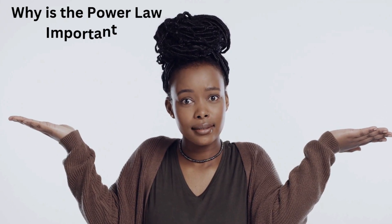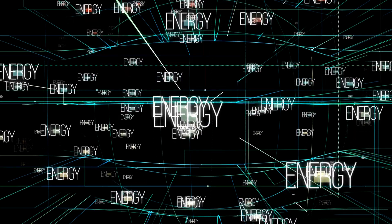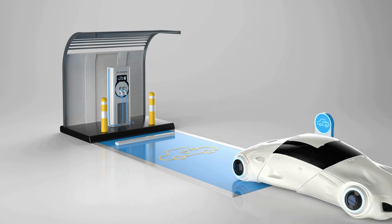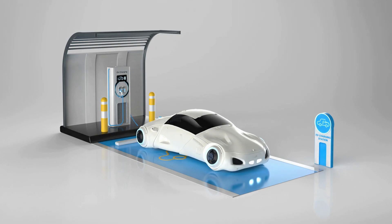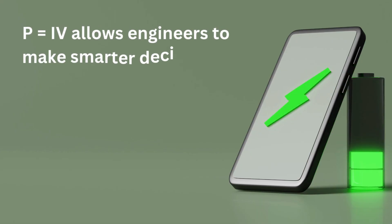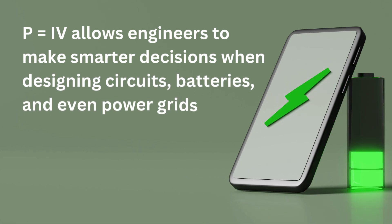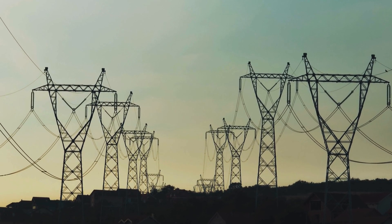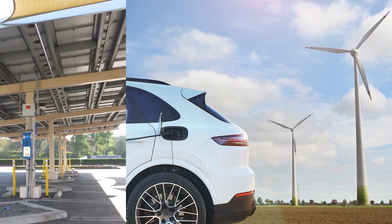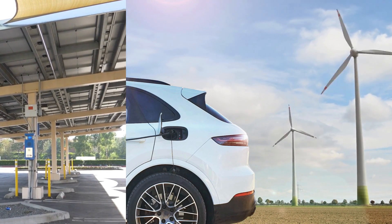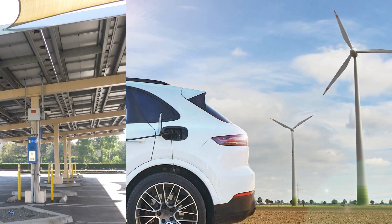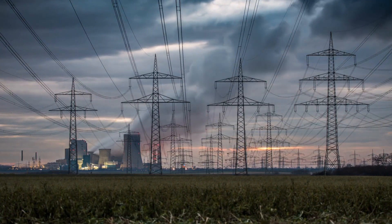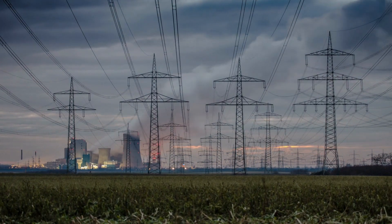Why is the power law important? This equation is crucial because it's at the heart of energy efficiency, device design, and power management. Understanding this formula allows engineers to make smarter decisions when designing circuits, batteries, and even power grids. Without it, we wouldn't be able to build energy-efficient devices, create sustainable power systems, or safely transmit electricity over vast distances. Renewable energy systems like solar panels and wind turbines rely on power law calculations to ensure that energy generated is used efficiently, without wasting energy through excessive current or heat. Whether you're designing a tiny microchip or managing an entire national power grid, P = IV gives you the tools to understand how power flows and how to optimize it.